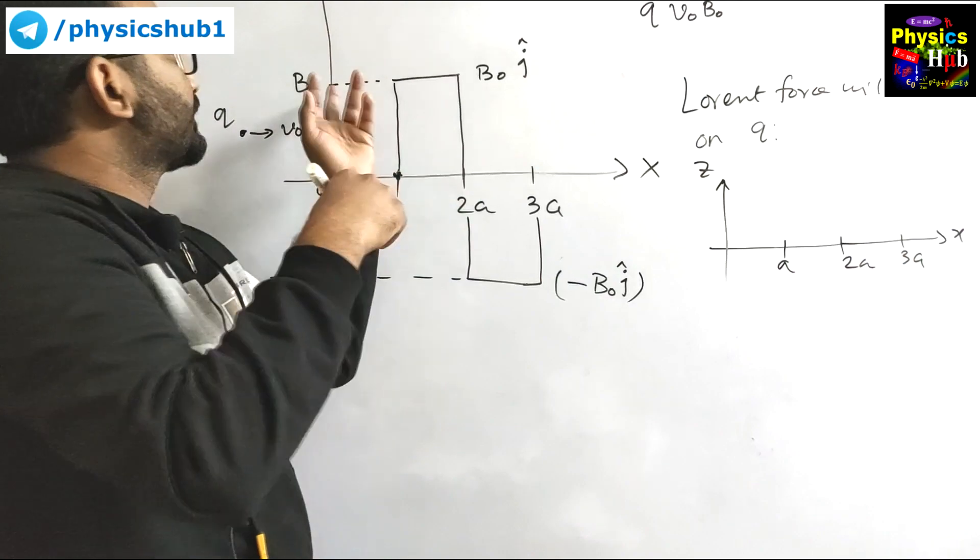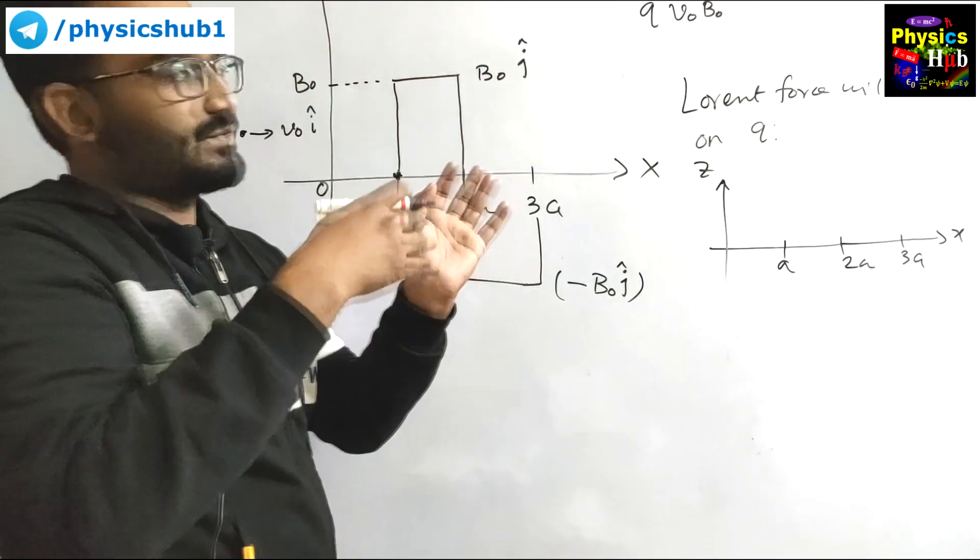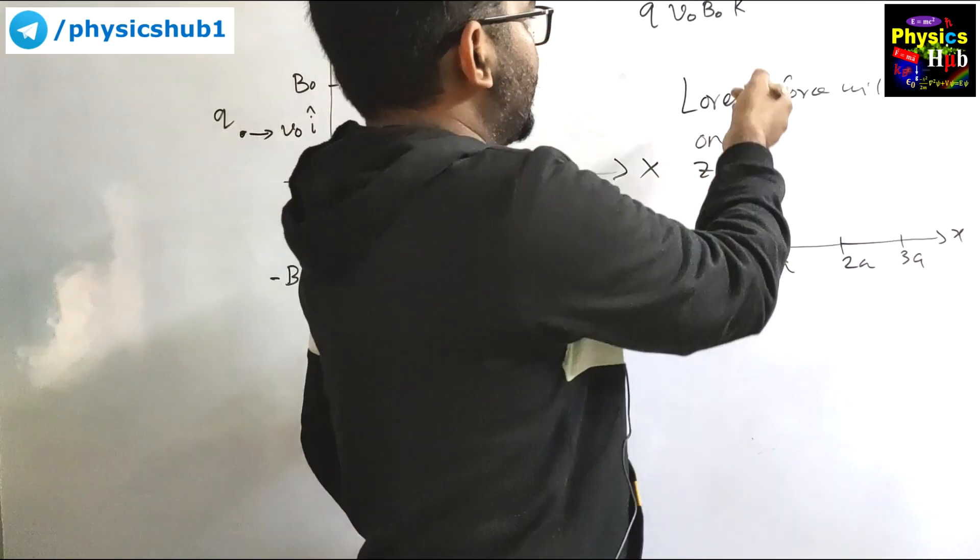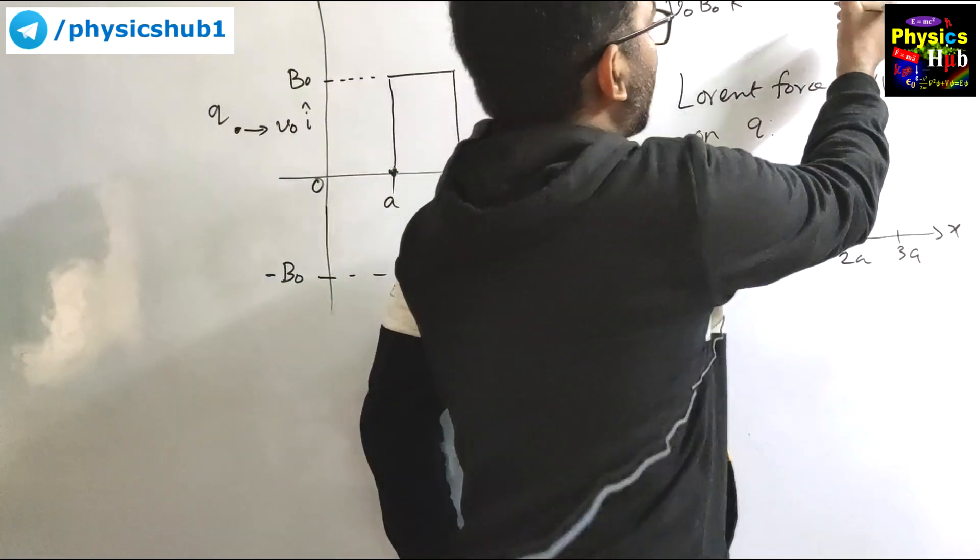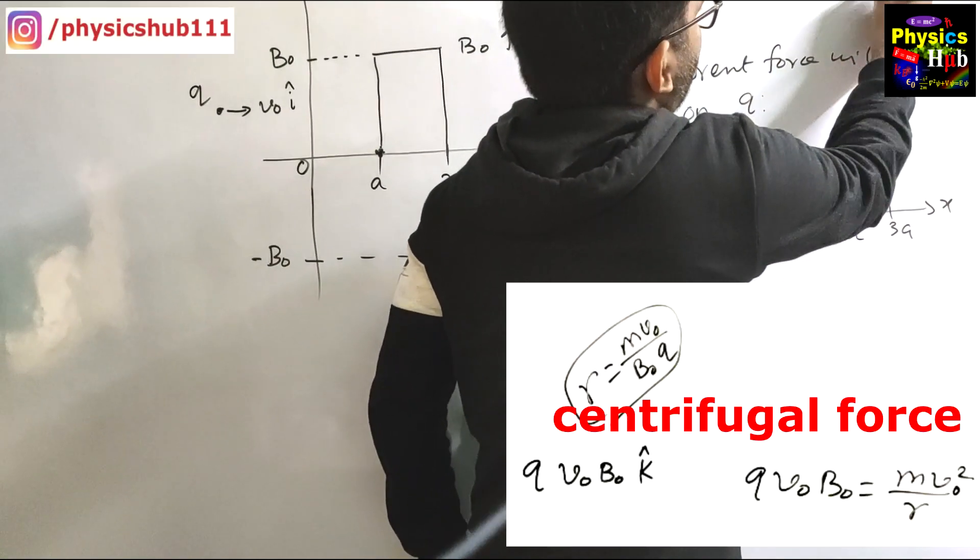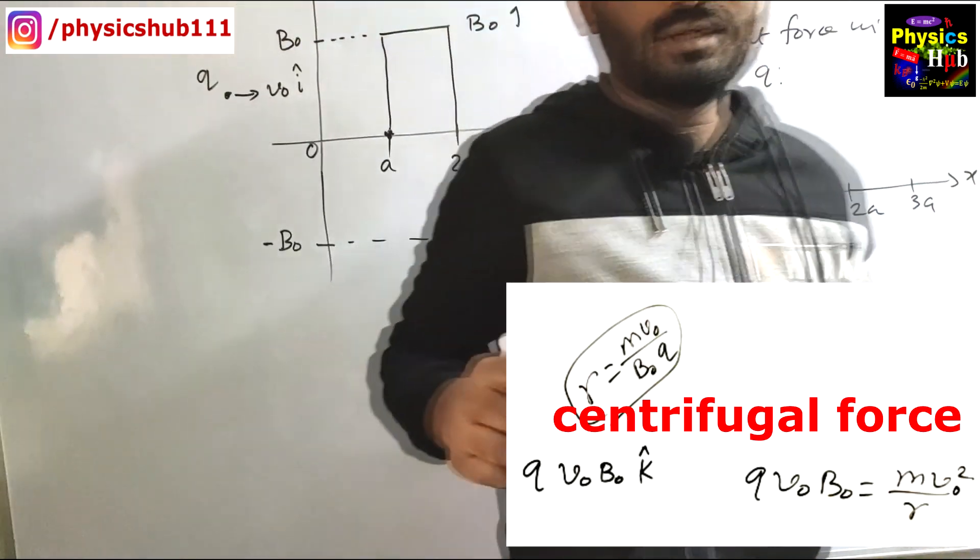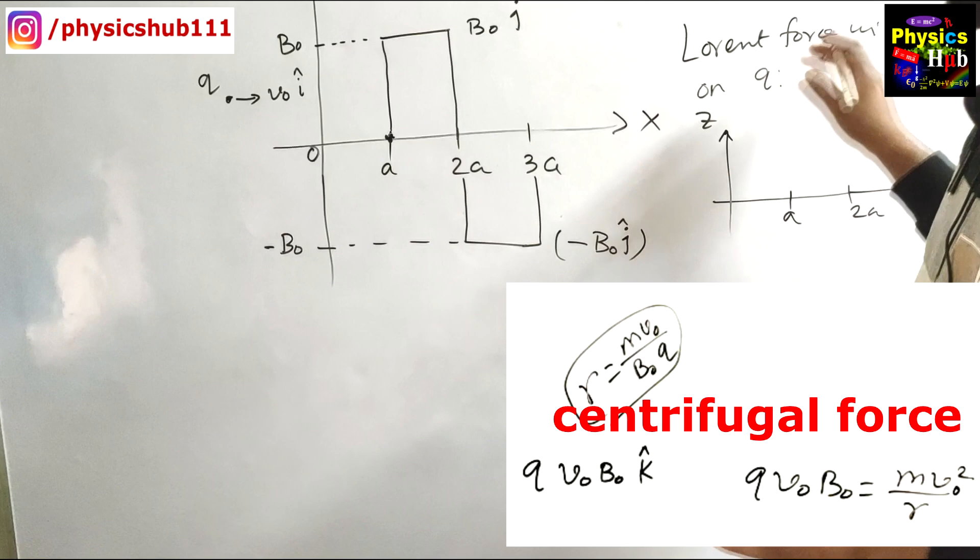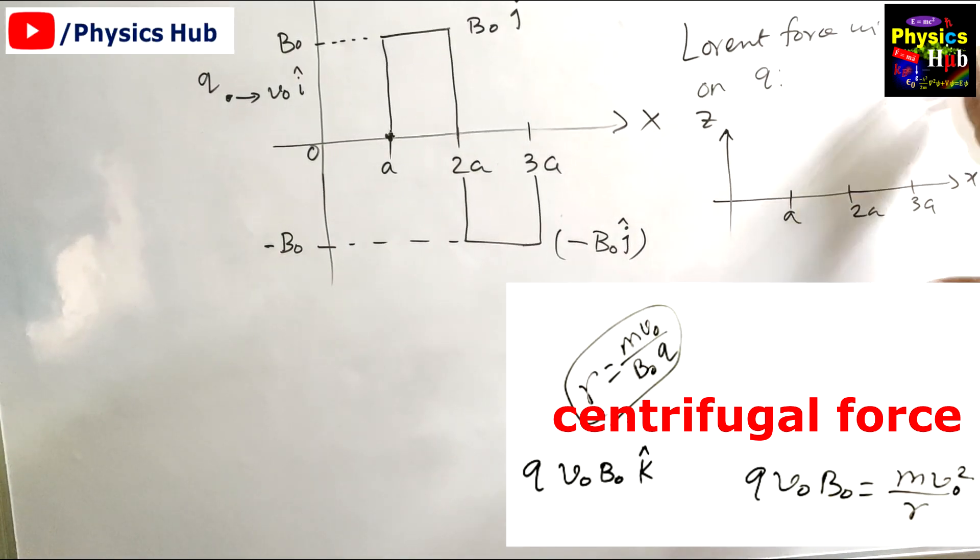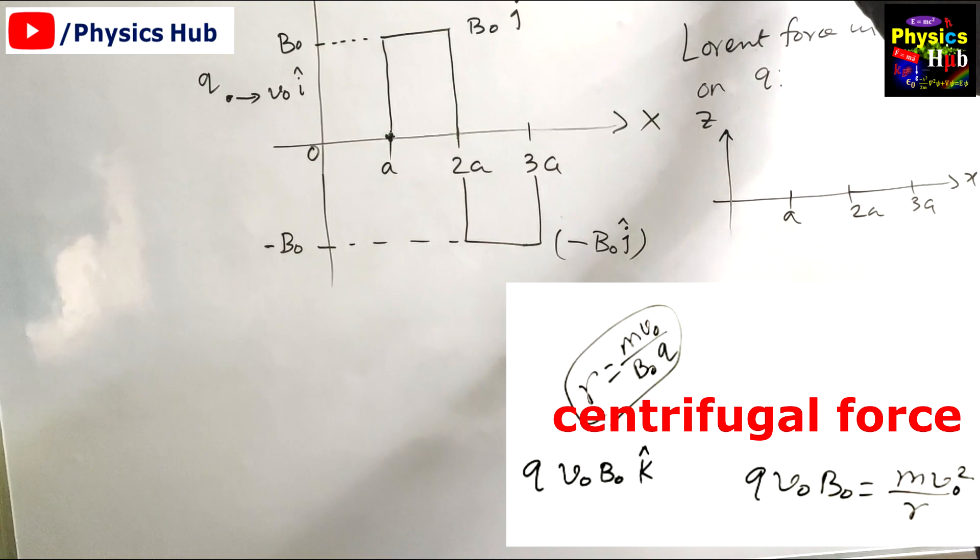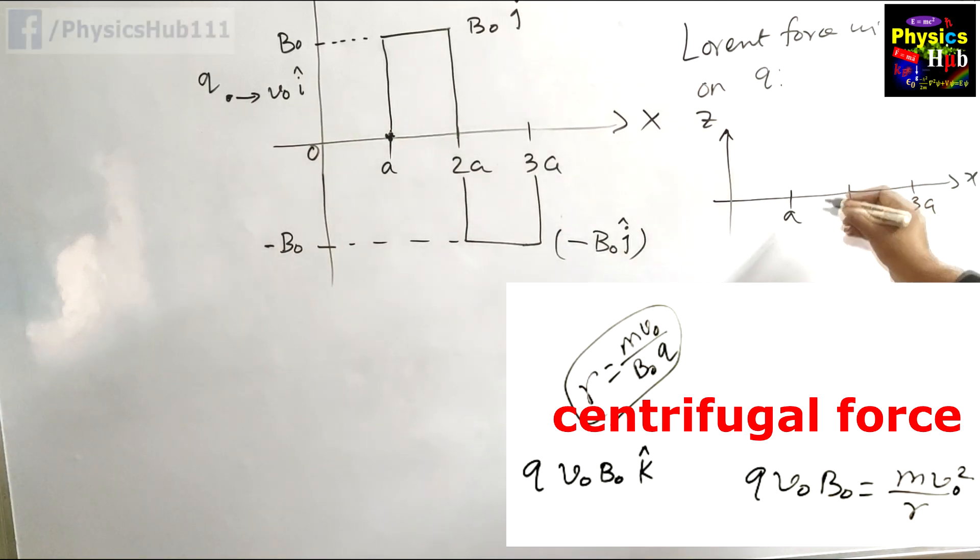The direction of v is i cap, direction of B is j cap, so i cross j cap is k cap. This force if you take the magnitude will be balanced with the centripetal force m v squared by r, and from here we can find out the radius of the circular trajectory.